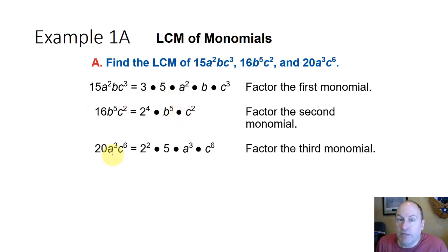And then in a similar way, the third term factors into 2 squared times 5 — that's the 20 — times a to the third times c to the sixth.